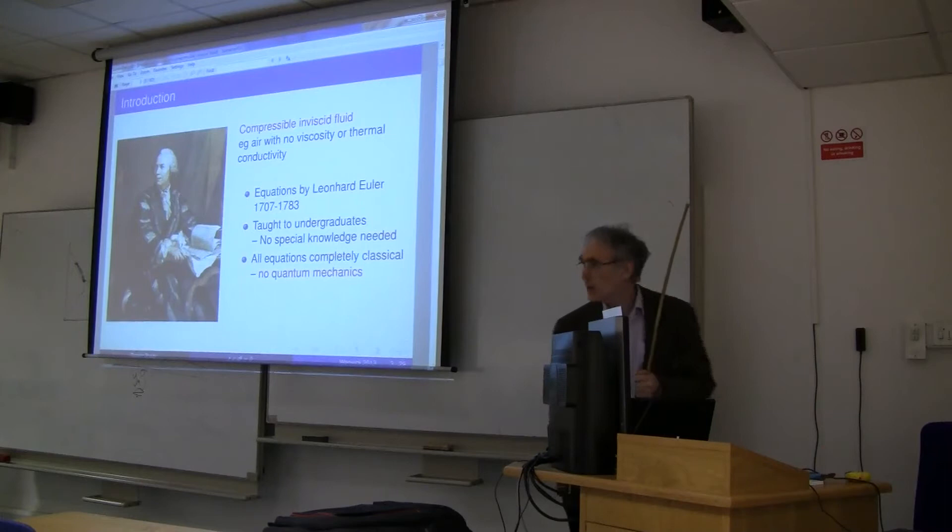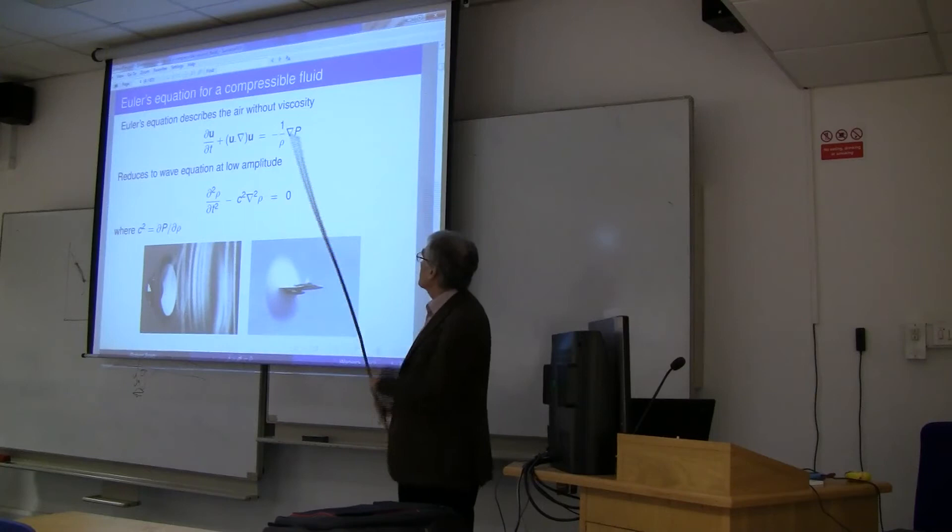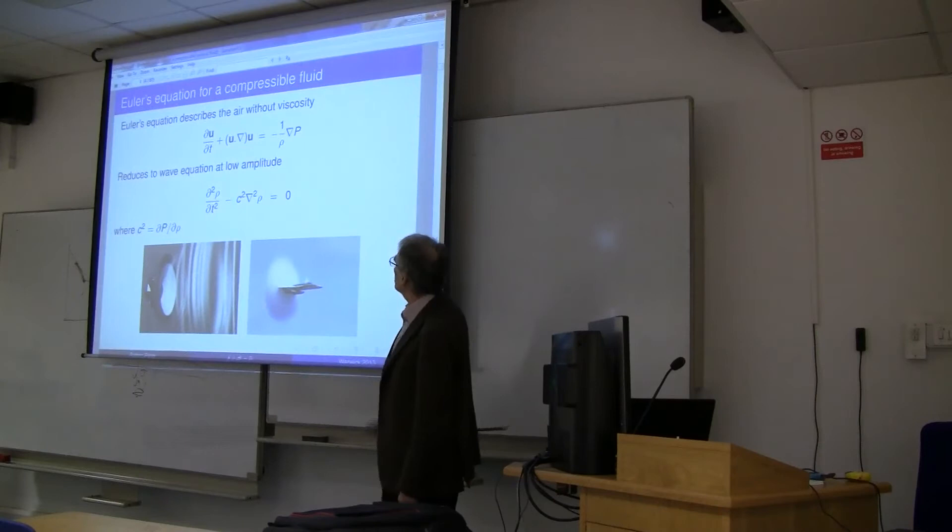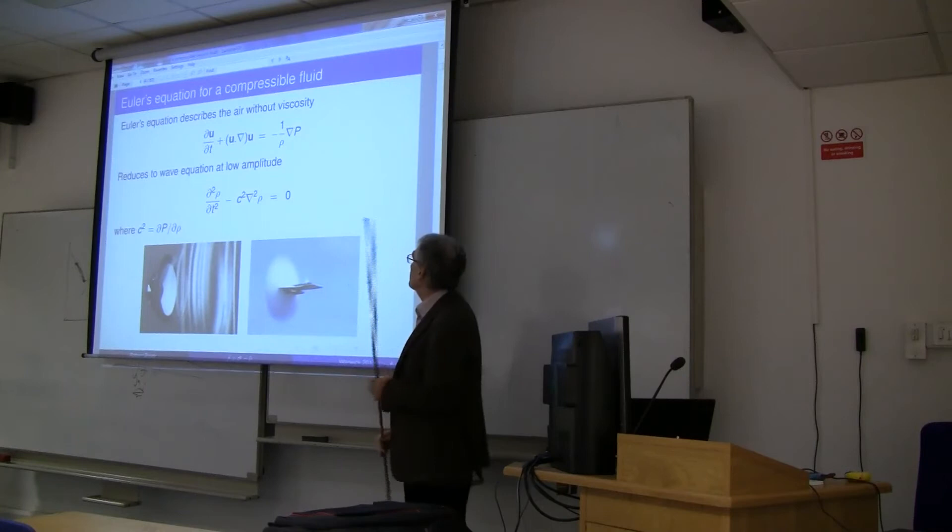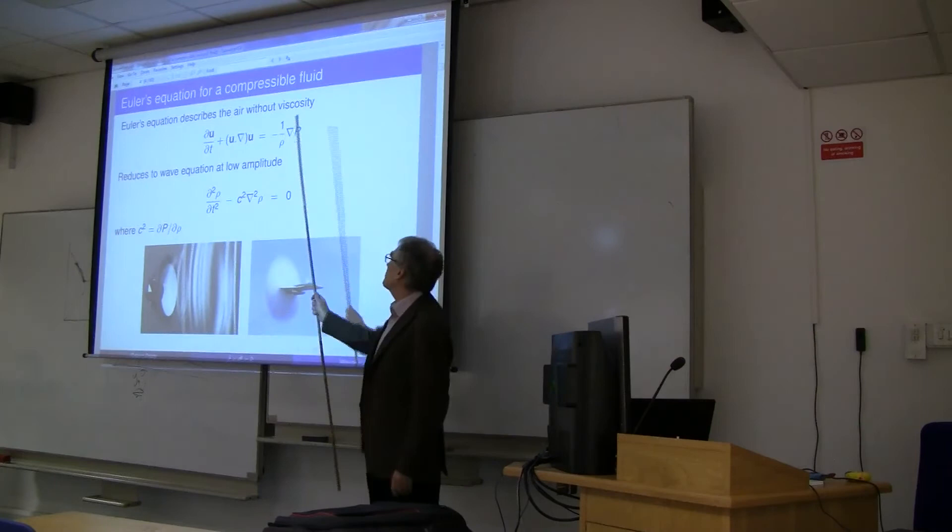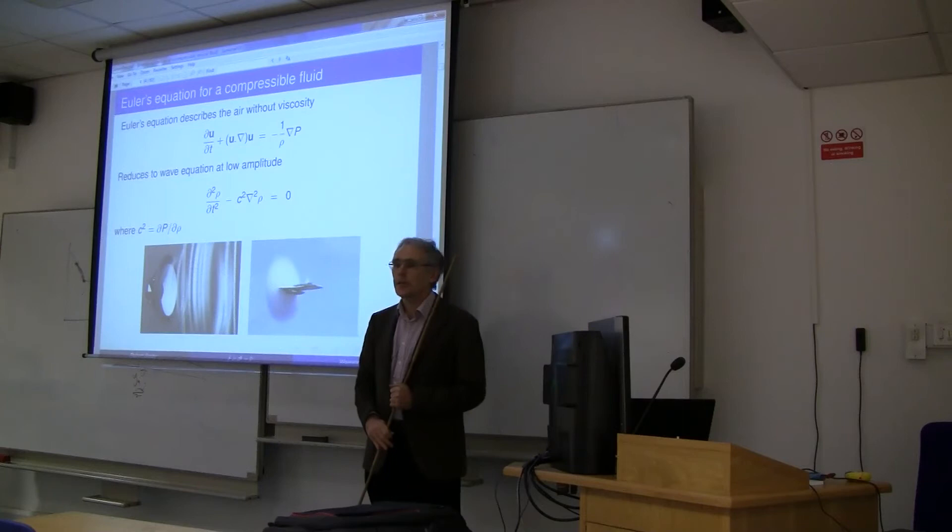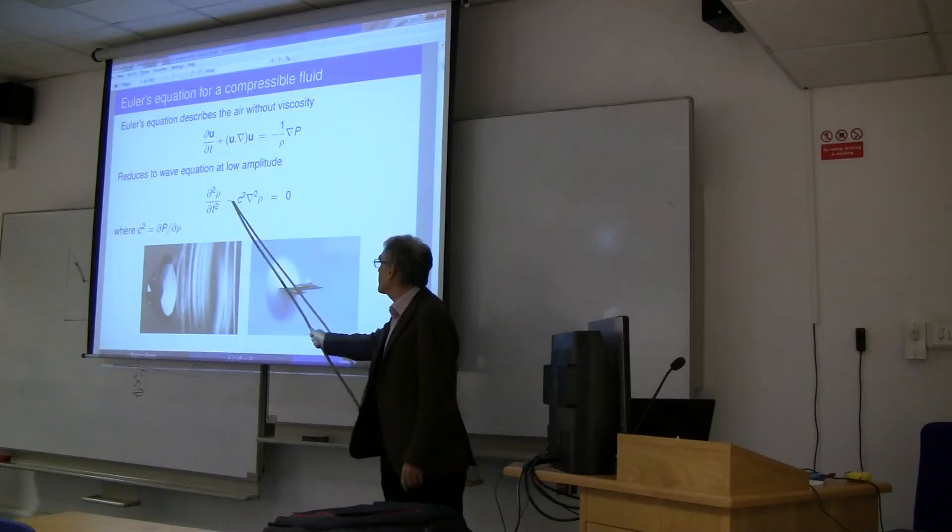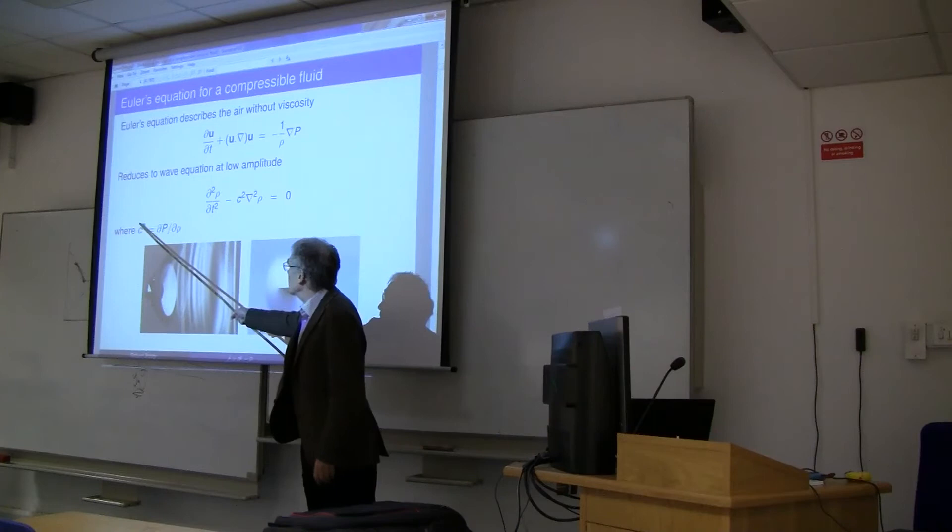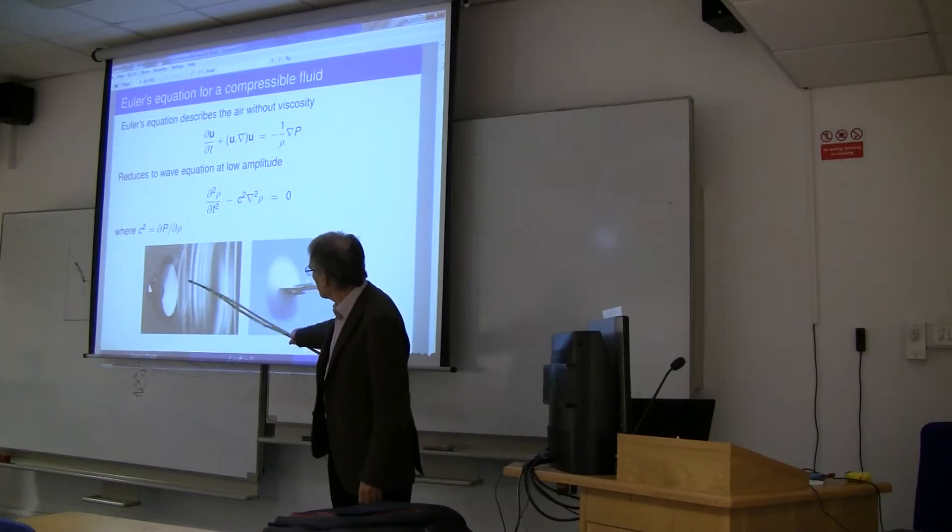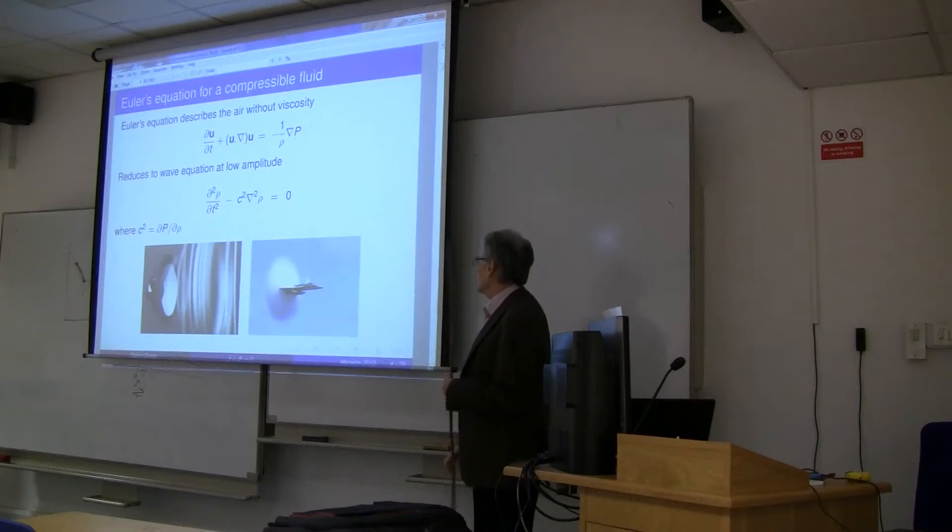This is Euler's equation. U is the velocity of motion of the fluid. dU by dt plus U dot grad U is the Bernoulli term, and minus 1 over rho grad P, where rho is the density and P is the pressure, is like a force pushing the fluid around. If the fluid is compressible like air, then at low amplitude it reduces to the standard wave equation, where C is the speed of sound. C squared equals dP by d rho. It has solutions like sound and more exotic solutions like breaking the sound barrier.